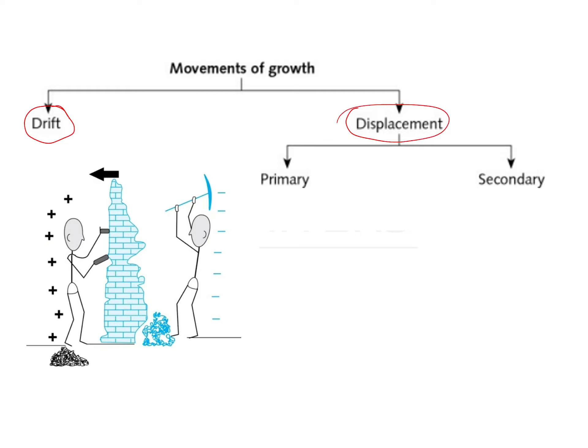As bone enlarges because of apposition, there are also areas of resorption, because of which the bone will remodel. This gives it its correct size, shape, structure, and approximation with the adjacent bones. Whenever there is an area of apposition — this is an area of apposition.